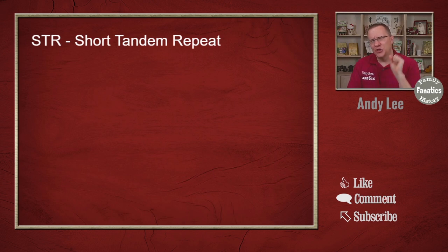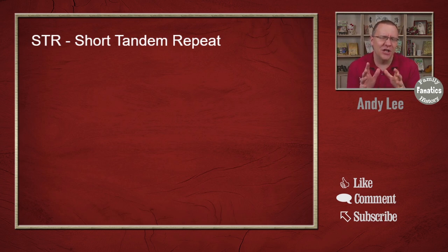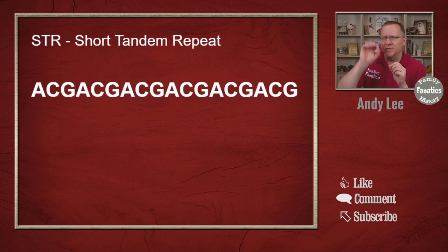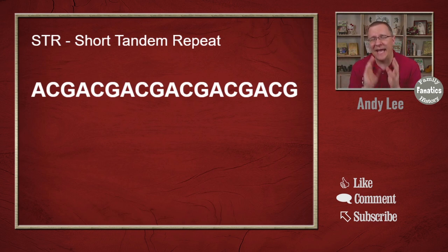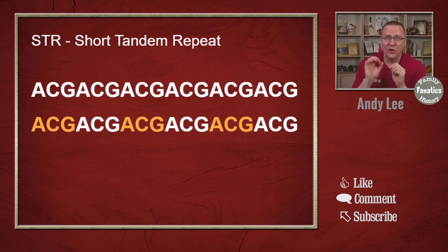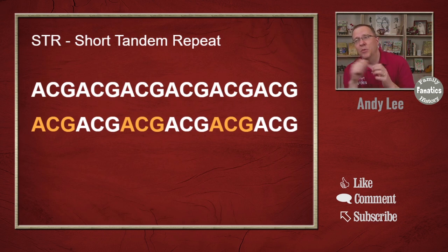It does this by looking at short tandem repeats, or STRs. You might have heard of this because in genetic genealogy, for a Y-DNA test, you're primarily looking at a set of STRs. A STR is a series of letters in the DNA code that has a repeating sequence. I put up this sequence here and color coded it — you can actually see that it's really the same sequence that's just repeated multiple times.